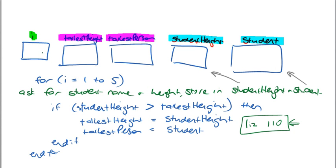For my first person through the loop, I is equal to one. Right now, we have to read in student height — Liz is 110 — and the student's name is Liz. I've asked for the student name and height, stored student height here, and stored the student name here.